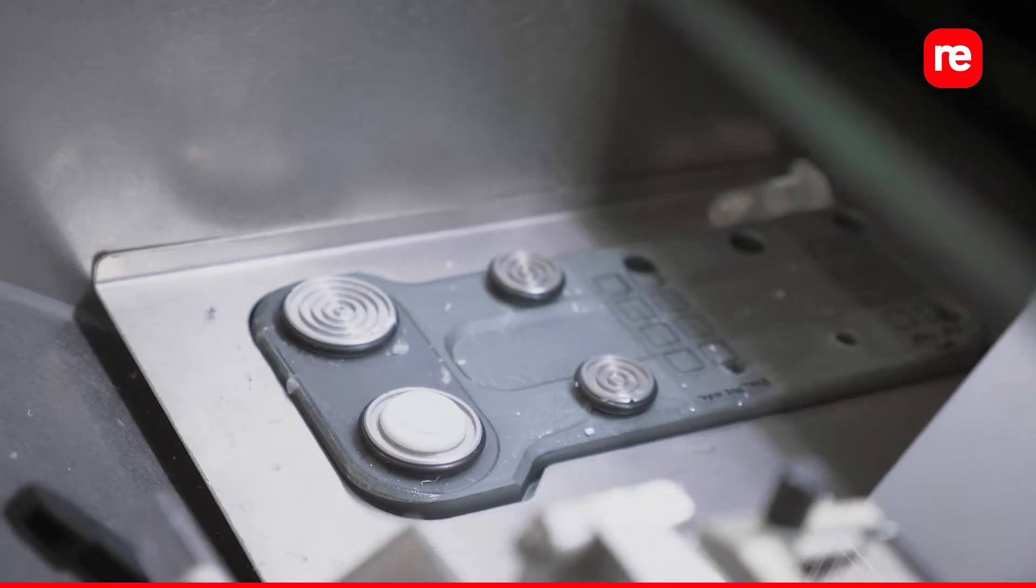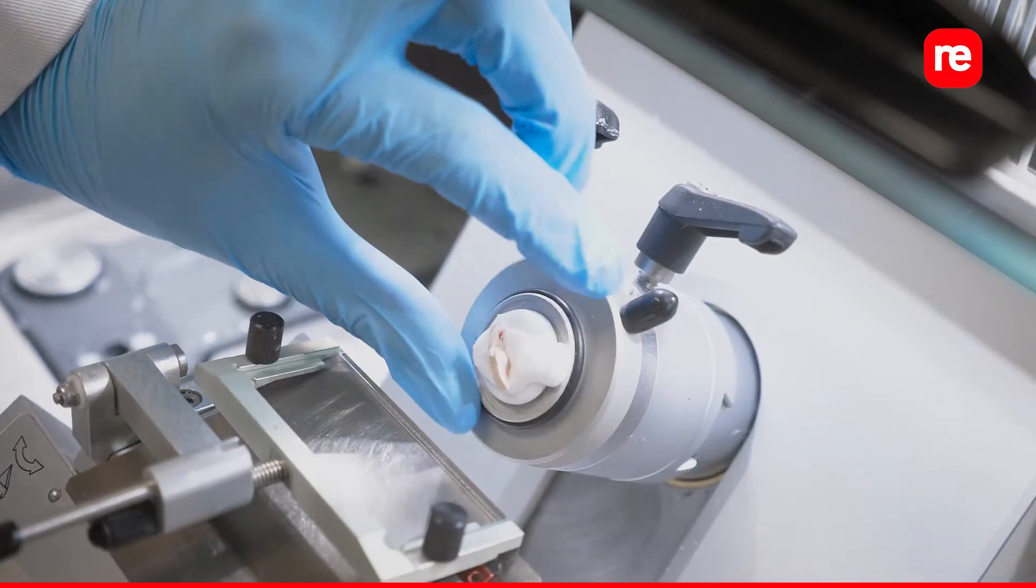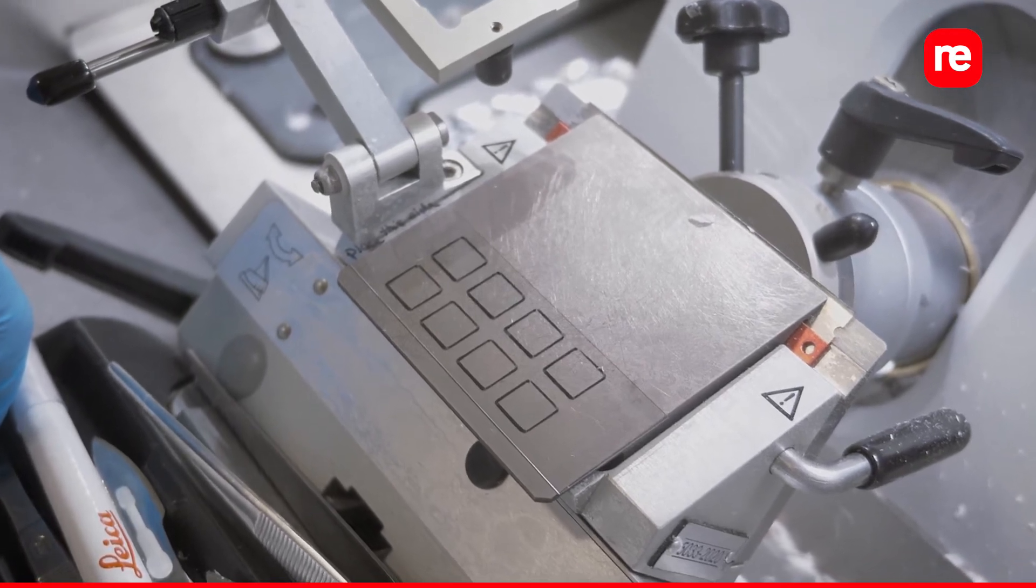First, I usually apply a base of OCT for better adhesion. Make sure the glass slide is on a flat surface in the cryostat chamber before transferring the sections.